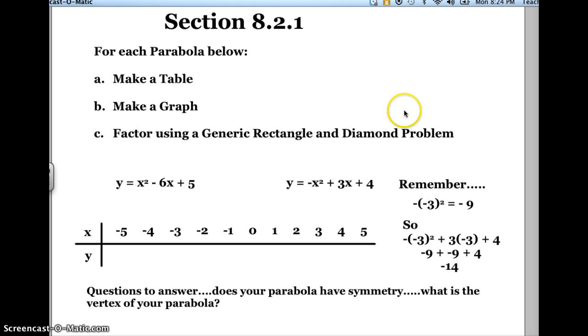Now when you make your table for this problem, I want you to take special care with the equation y equals negative x squared plus 3x plus 4. And the reason being, when you put a negative number in for x, let's say like a negative 3, I want you to remember that you're supposed to square the negative 3 first and then multiply it by a negative 1 or by a negative sign.